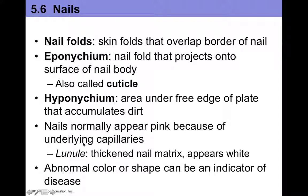Nails normally appear pink because of underlying capillaries. The lunule is a thickened nail matrix that appears whitish on the proximal end of your nail. Abnormal color and shape of the nails can be an indicator of disease, including cardiovascular disease, since nails need to be nourished by blood vessels. Abnormal nail growth can also occur with certain hormonal disturbances or nutritional deficiencies, so nail health is a fascinating indicator of overall health.